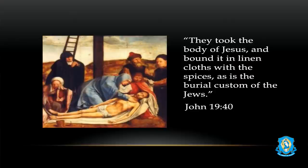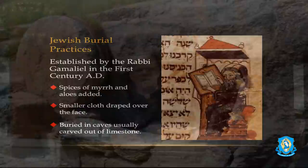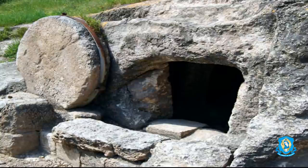We have a document from a first-century rabbi that lists what was done. It says spices of myrrh and aloes were added, a smaller cloth was draped over the face — and we'll talk about that in a minute — and they were buried in caves usually carved out of limestone. The next picture shows an example of the type of tomb we would see in Christ's time, hewn right out of the rock.